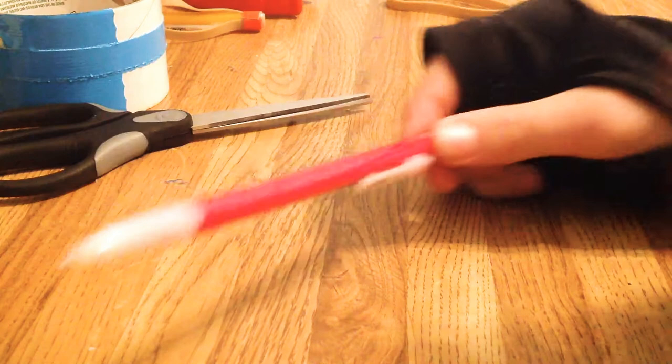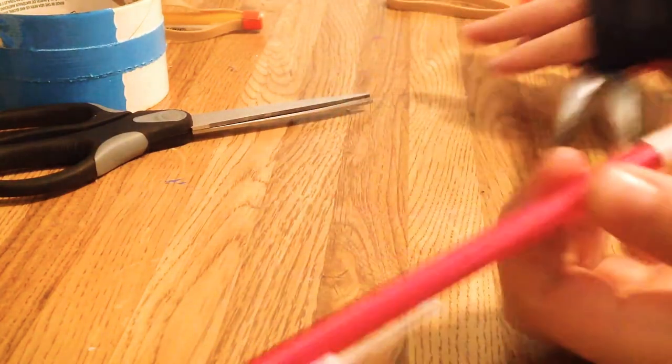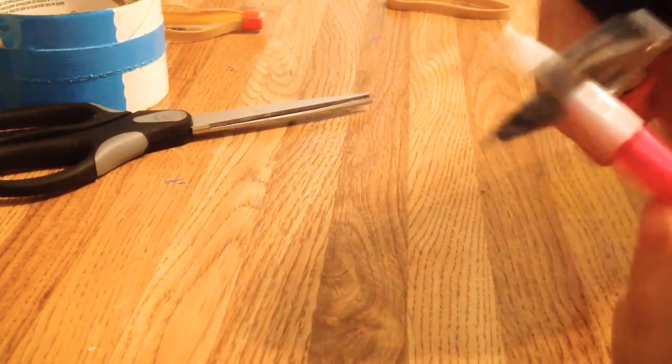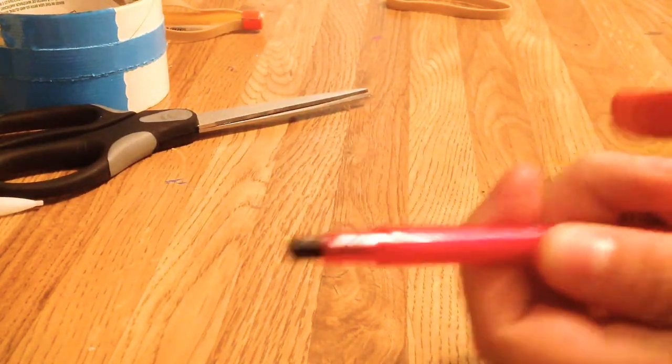So to start, we're going to take the pliers and the pencil and we're going to take off this top right here. We can discard that. So now we have this little thing right here.